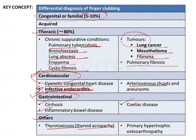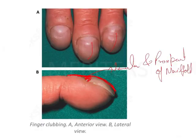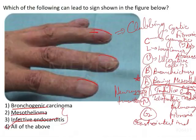So basically, if you remember that mnemonic, coming back to the particular question, the answer is option 4 — all of these will be the answer.